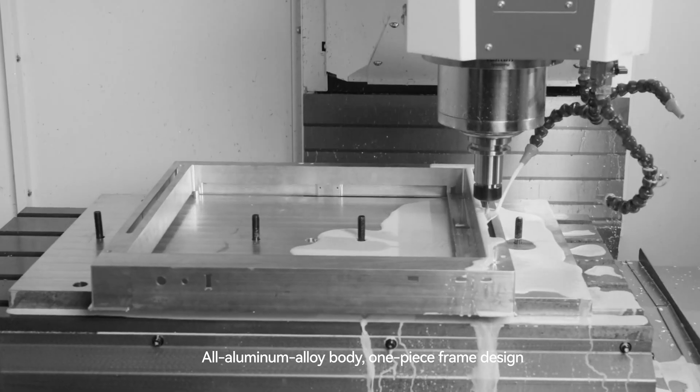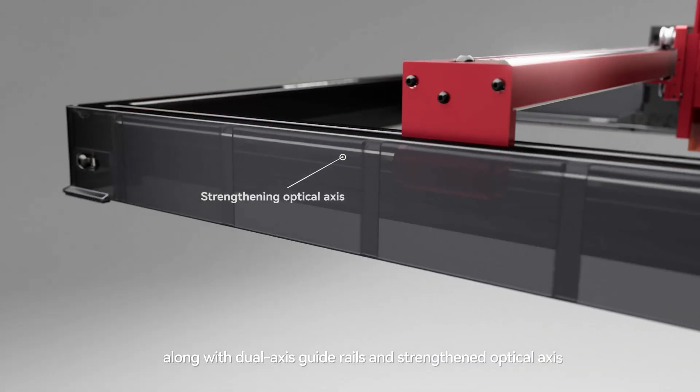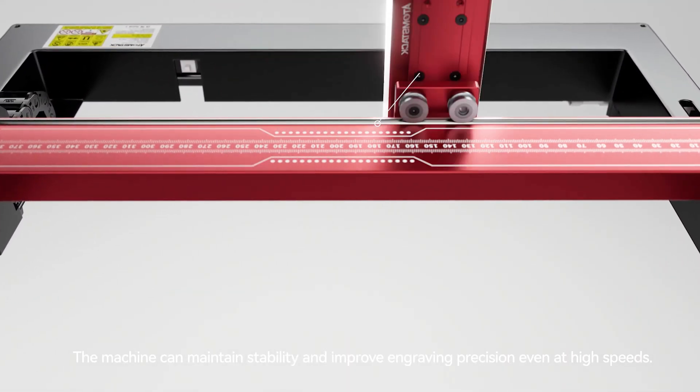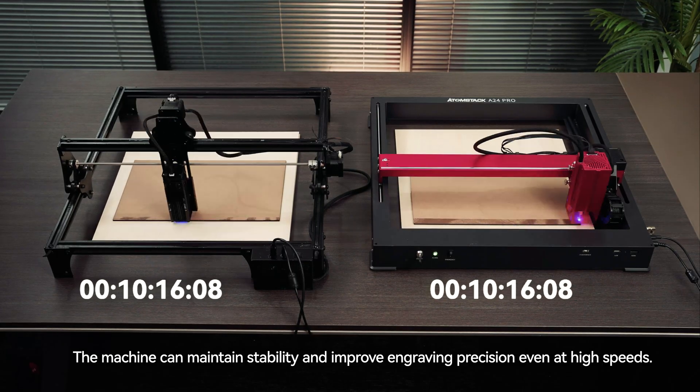All-aluminum alloy body, one-piece frame design, along with dual-axis guide rails and strengthened optical axis. The machine can maintain stability and improve engraving precision even at high speeds.